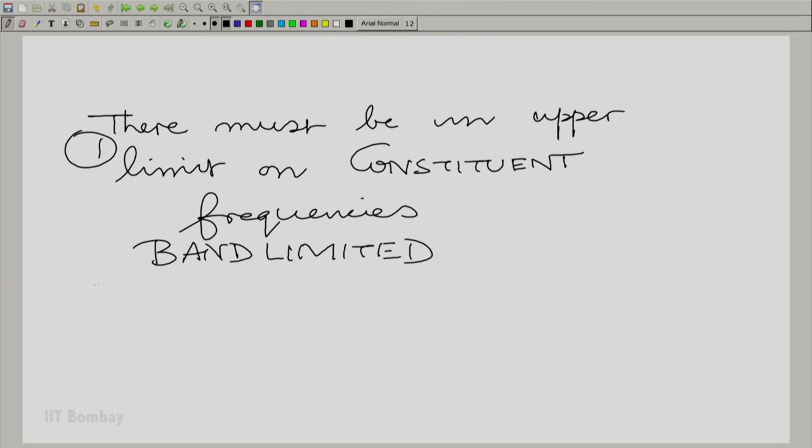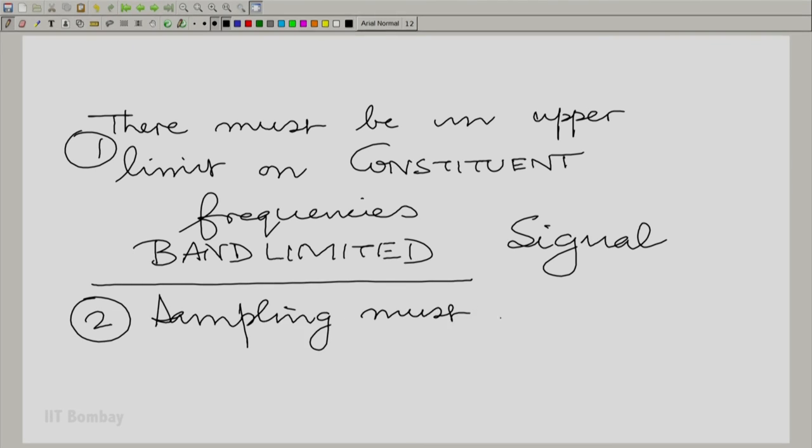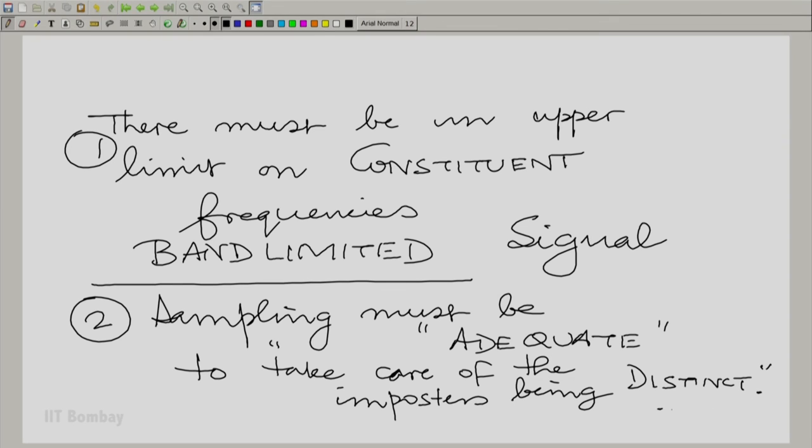So, we are saying a signal must be band-limited for it to be sampled without these impostors creating trouble. And the second thing is that the sampling must be adequate, whatever that means. Adequate in what sense? To take care of impostors. So, we have concluded this session essentially by noting that we need to have two things. We need to have a signal which has an upper limit on the constituent frequency, and we need to have a sampling rate which can take care of all these constituent frequencies.